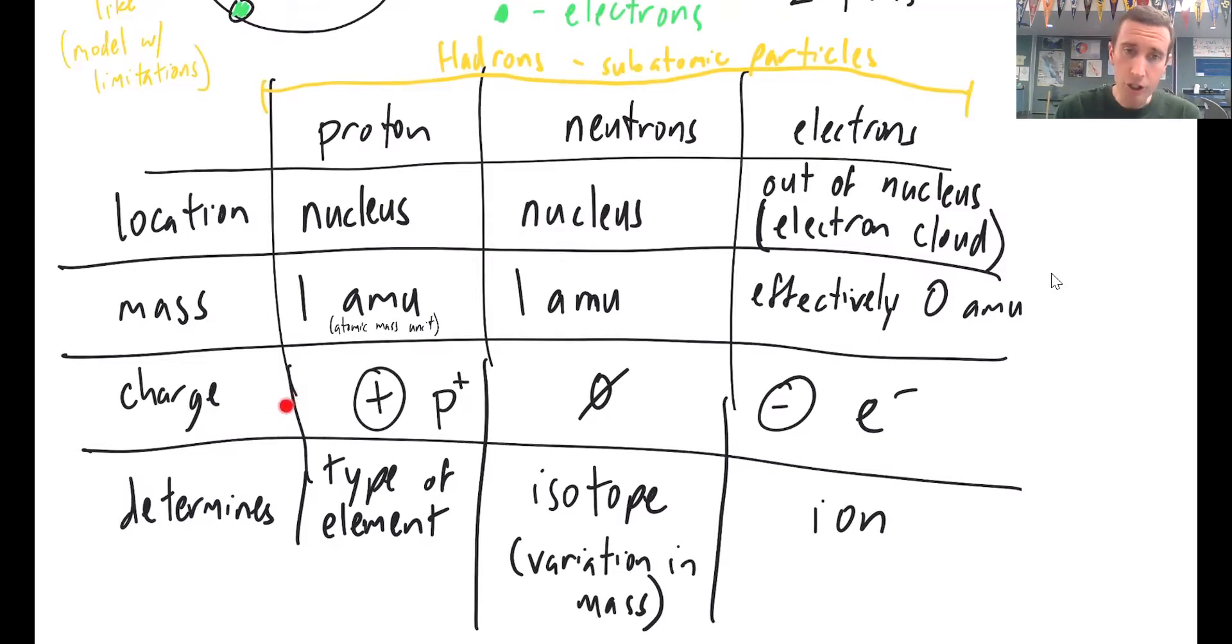In terms of charge, protons, pro is positive. So protons have a positive charge. I'm going to represent that with a plus sign. Or you could see P plus for proton positive charge. Neutrons have a neutral charge. So those have like no charge in them.